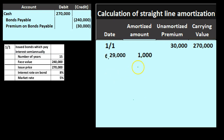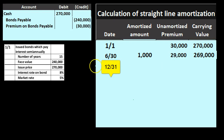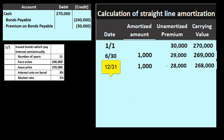We'll reduce the premium by $1,000 each period. After the first period, the unamortized premium goes from $30,000 down to $29,000, and the carrying value is $240,000 plus $29,000. Six months later another $1,000 reduction — straight-line, so the amount is always the same. The premium goes from $29,000 to $28,000, and the carrying value becomes $240,000 plus $28,000.